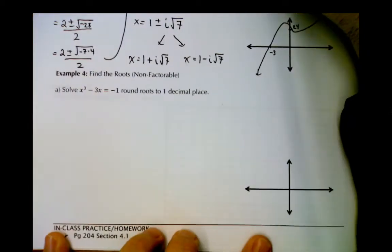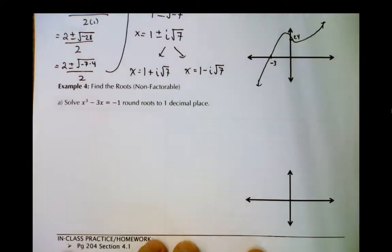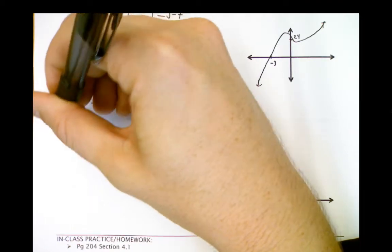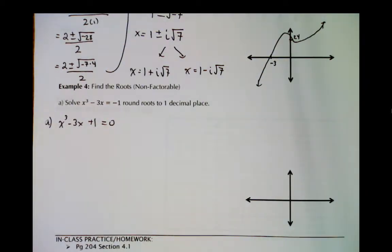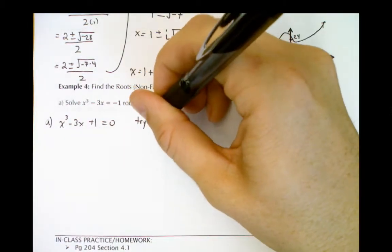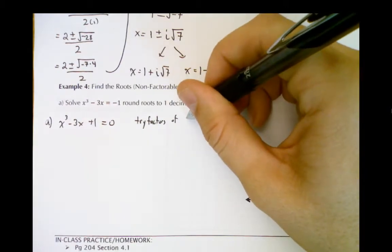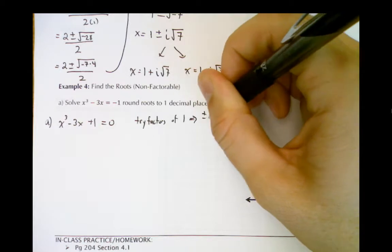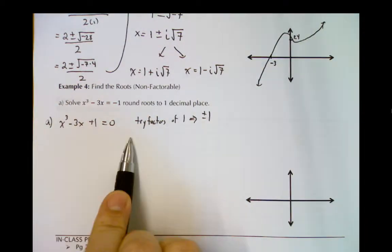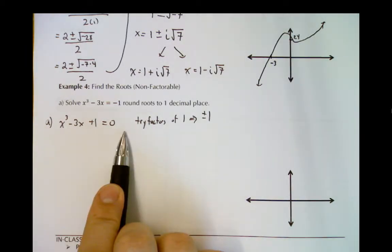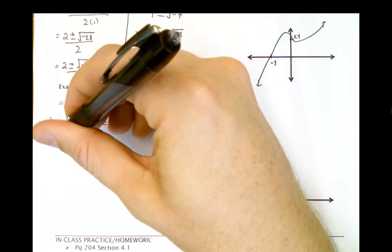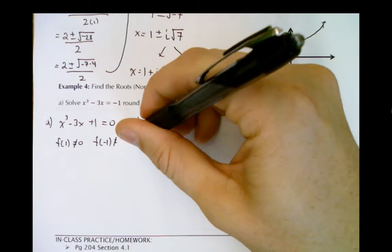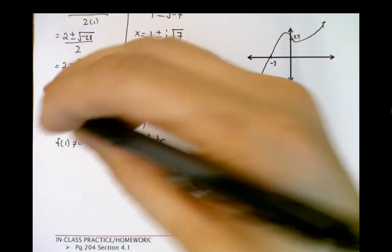Last example: what if you're asked to find the roots and you can't factor? For example, x cubed minus 3x plus 1 equals zero. If I'm asked to solve this equation I would try the factor theorem with plus or minus 1. If you try positive 1 you don't get a remainder of zero, and if you try negative 1 you don't get a remainder of zero — therefore it's not factorable.